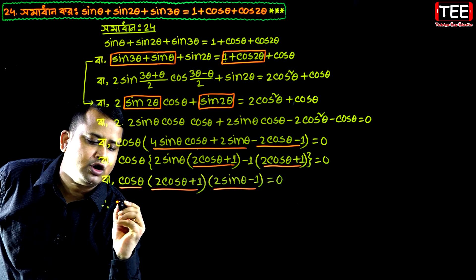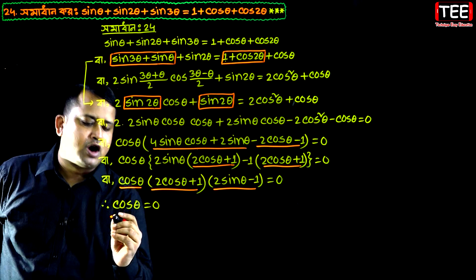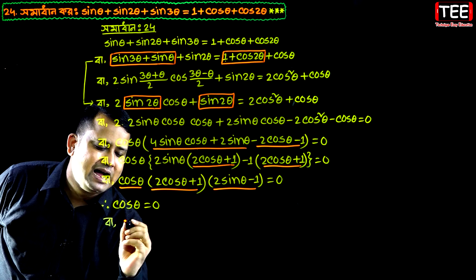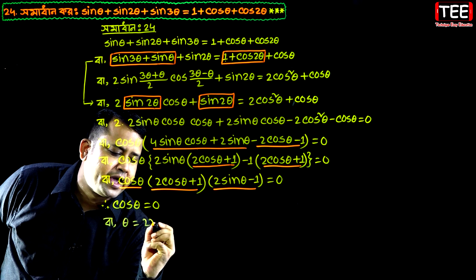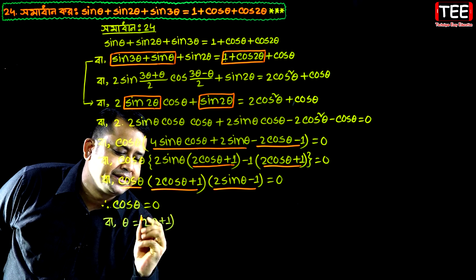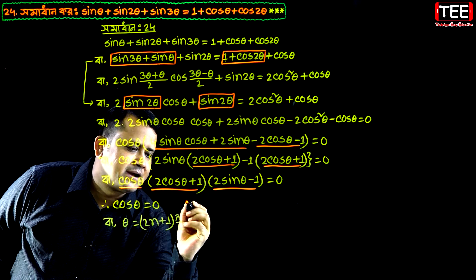Equal to 0, then we write 2 theta equal to 2n plus 1 into pi by 2. We write this.